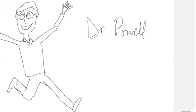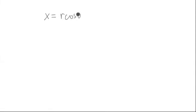Welcome to a lesson with Dr. Powell. Let's take a look at something that will pop up sometimes, especially when we're changing coordinates, like from polar coordinates to Cartesian or something else. We might have x equal to r cosine theta and y equal to r sine theta. We're going to think about the chain rule and how we can use it in relation with this.